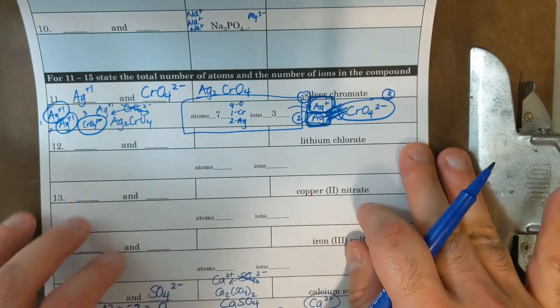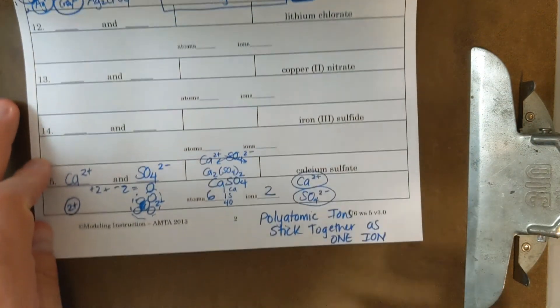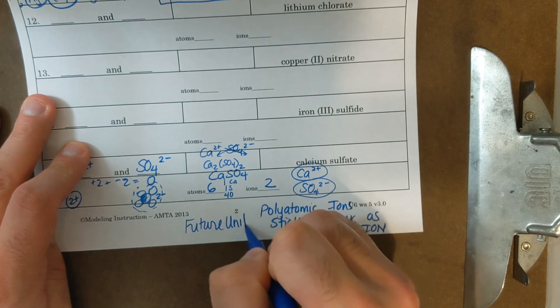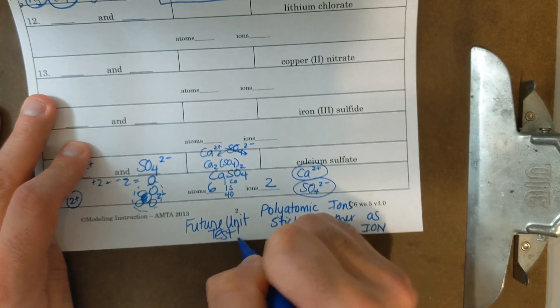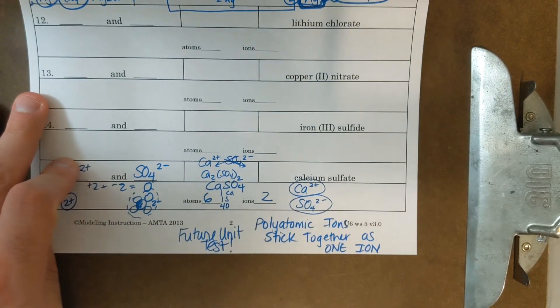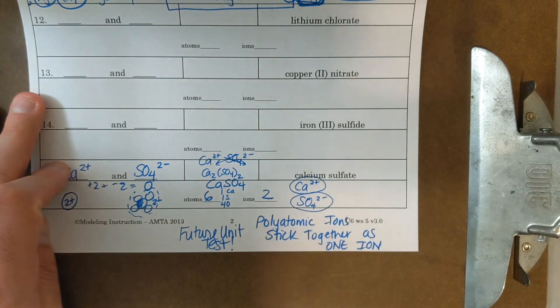So I want you to use this information now to answer questions 12, 13, and 14. And you will definitely have to know this for your future unit test. Future unit test is going to give you an example where it says how many atoms and how many ions are in this formula. So make sure you know how to do that. It's going to be very important later on in the year.